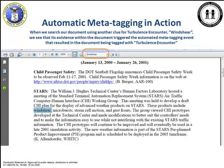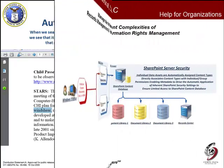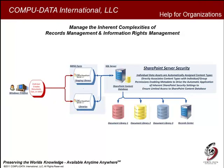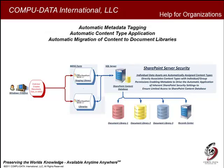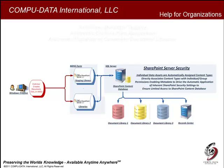We now have an understanding of how the taxonomy manager works and how a taxonomy can be used as a business rule for tagging documents. But let's take this a step further and not just tag for semantics — let's look at how we can do this to manage the inherent complexities of records management and information rights management. CDI and Concept Searching have an easy to implement and scalable solution that facilitates the process from metadata tagging through content type application and the automatic migration of content to document libraries, ensuring proper storage and preservation while also controlling both access and usage of organizational content.